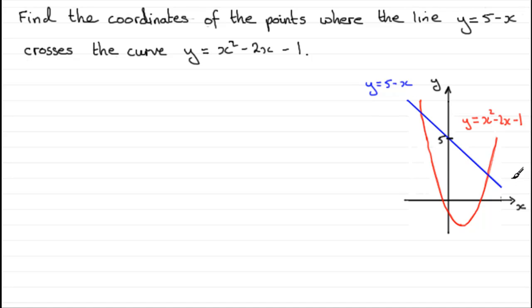We've got a negative gradient. And we have a parabola, y equals x squared minus 2x minus 1, which we know is going to cross the y-axis at negative 1. That's when x is 0.